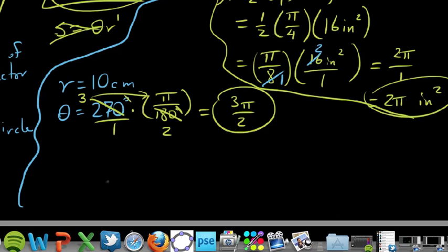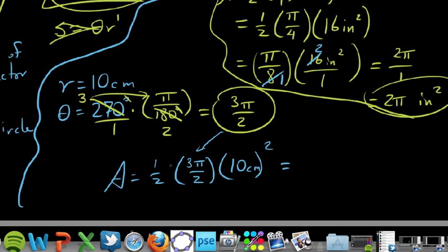So we say area. Area of this sector would be 1 half theta r squared. Where theta, we just discovered, was 3 pi halves. And r is 10 centimeters. So we'll go ahead and do a few things here. We can multiply 1 over 2 times 3 pi over 2. Straight across there, we get 3 pi on top. And on bottom, 2 times 2 is 4. And then over here, 10 centimeters squared is 100 square centimeters. We want square centimeters this time.